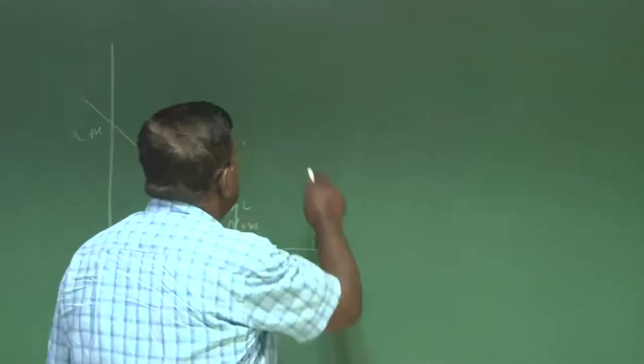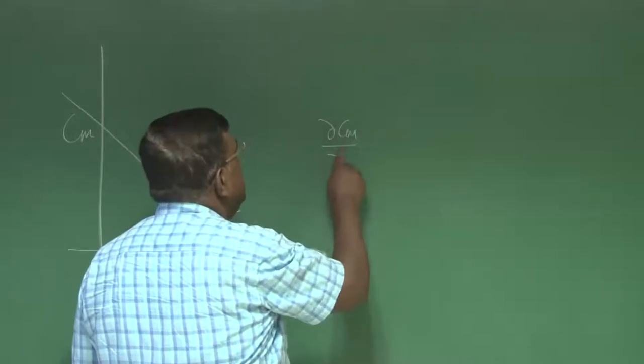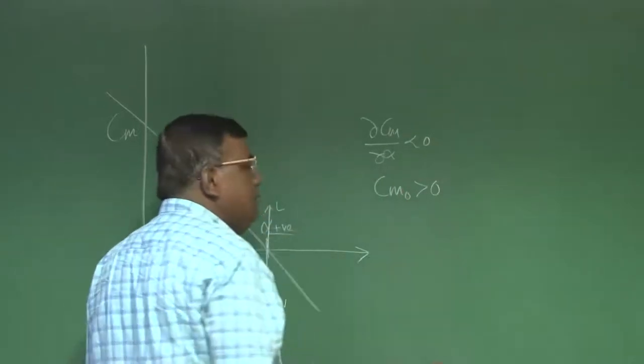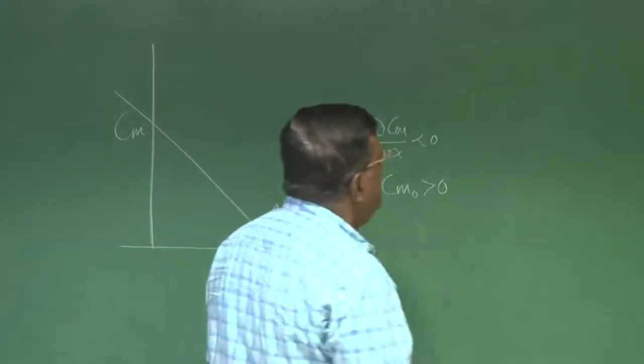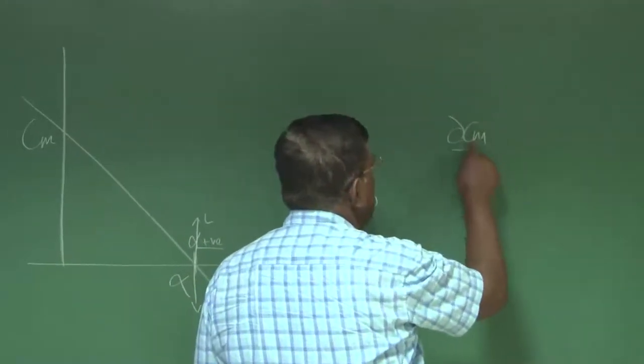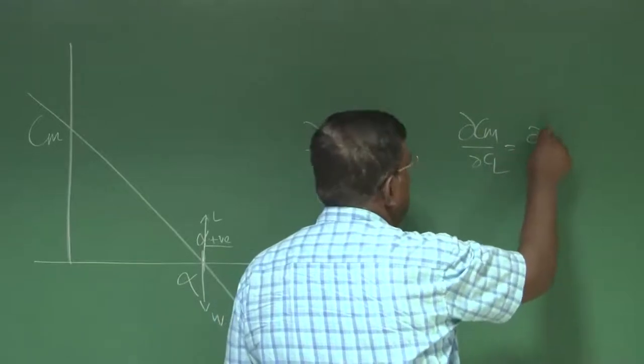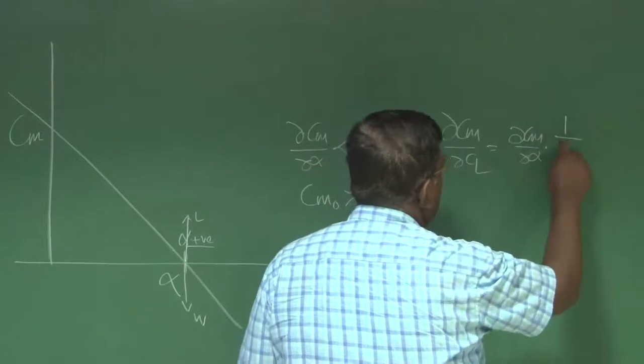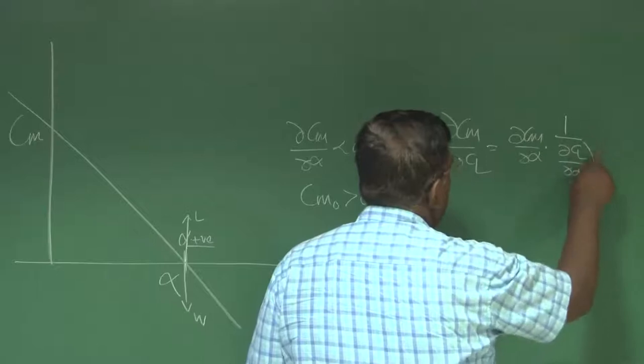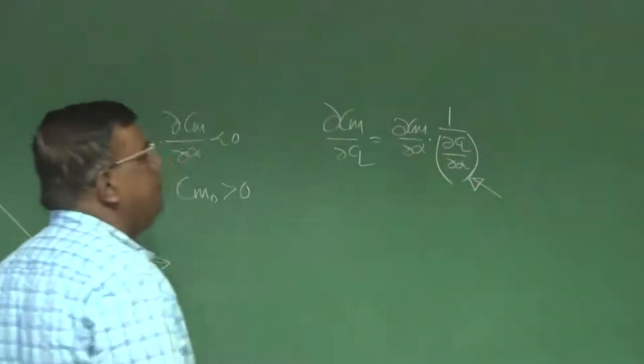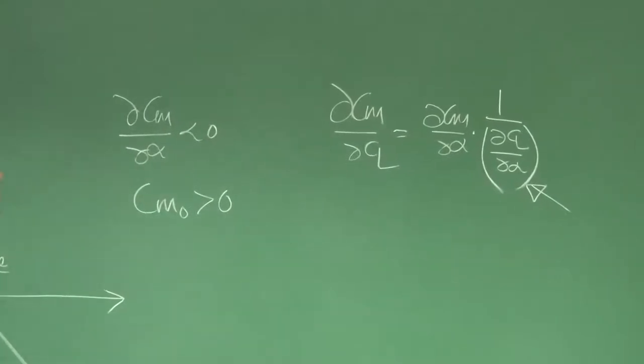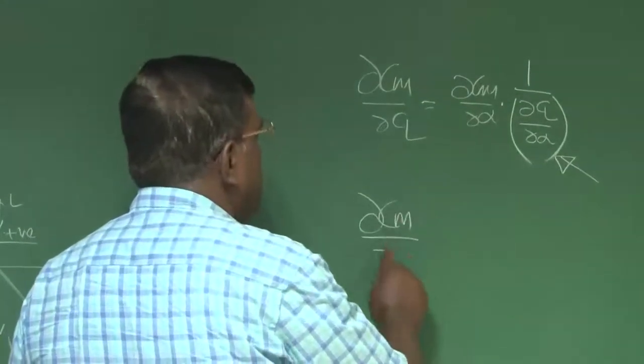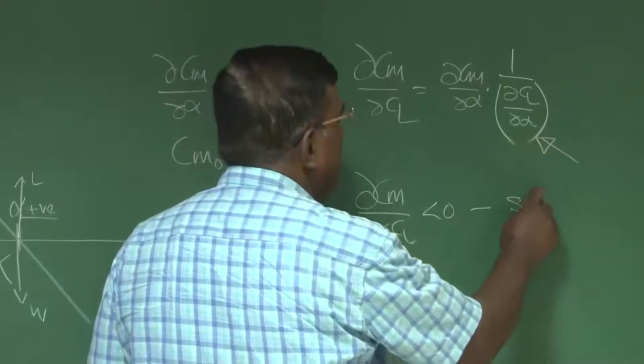For example, we have seen for static stability dCm by d alpha should be less than 0, and to have positive trim, Cm naught should be greater than 0. We have also seen that dCm by dCl is nothing but dCm by d alpha divided by dCl by d alpha. Since this gentleman is always positive, which is lift curve slope, when I say dCm by d alpha less than 0 is a condition for static stability.